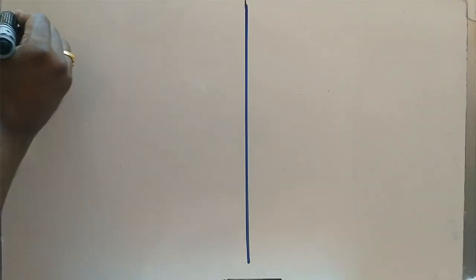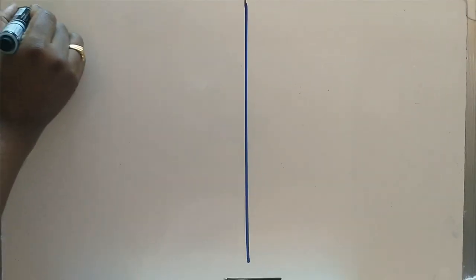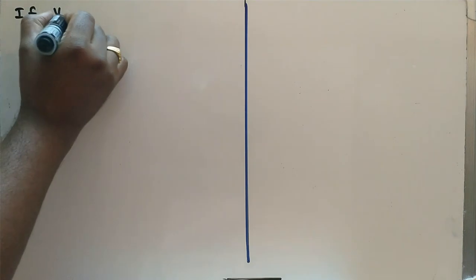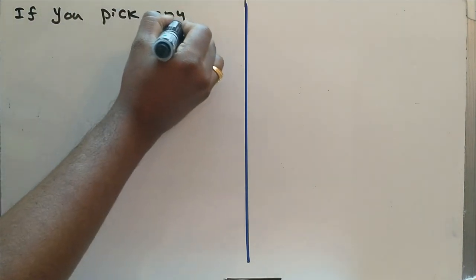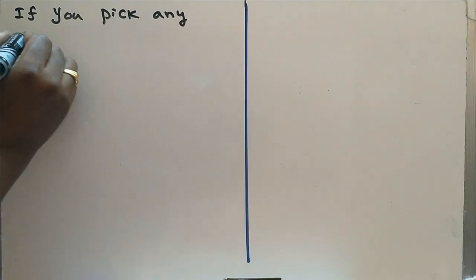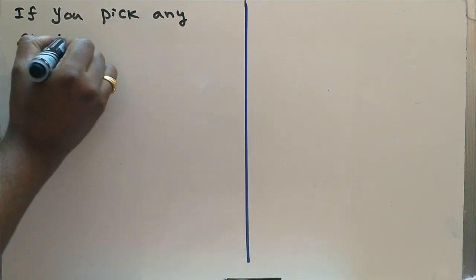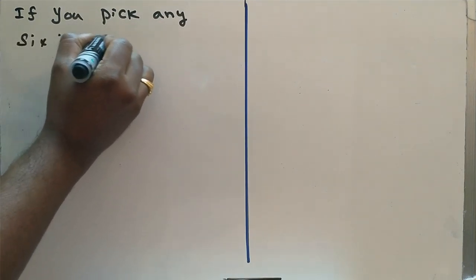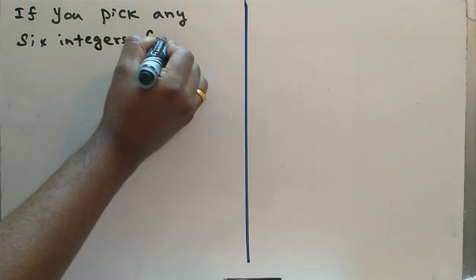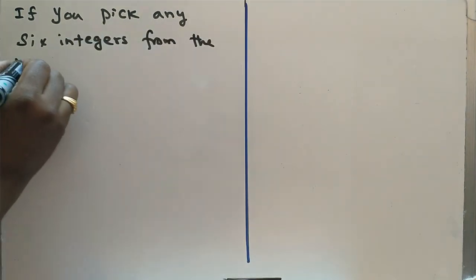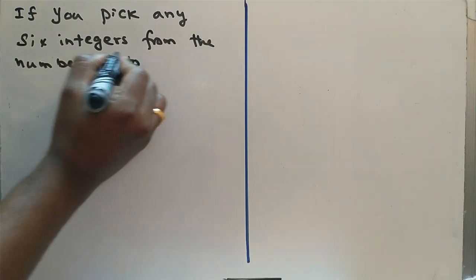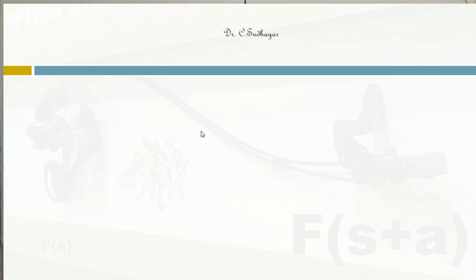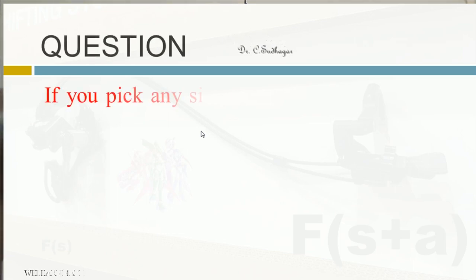Now let us see how the first theorem works. During an examination, if you pick any six integers from the numbers 1 to 10, then at least two of them will add up to 11.